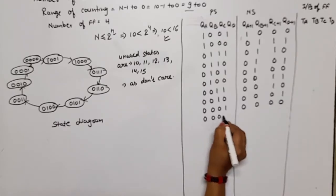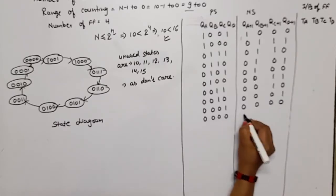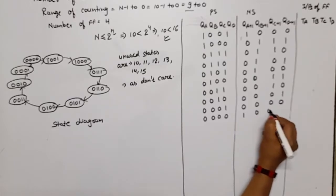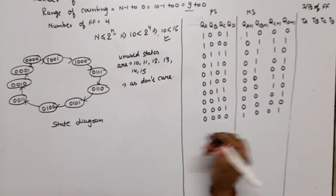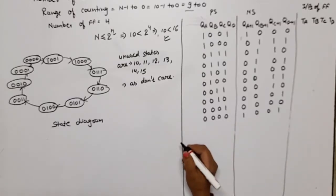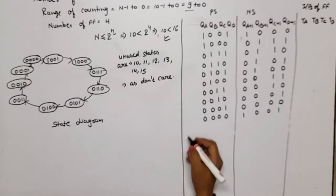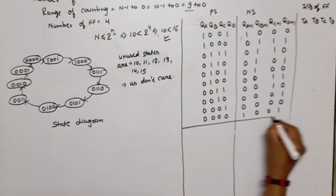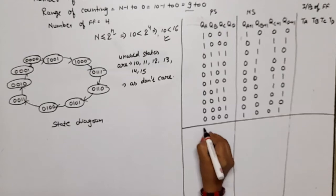Present state 1, next state 0. Present state 0, next state 9 — it rotates back. The unused states 10, 11, 12, 13, 14, and 15 are marked as don't cares in the excitation table.